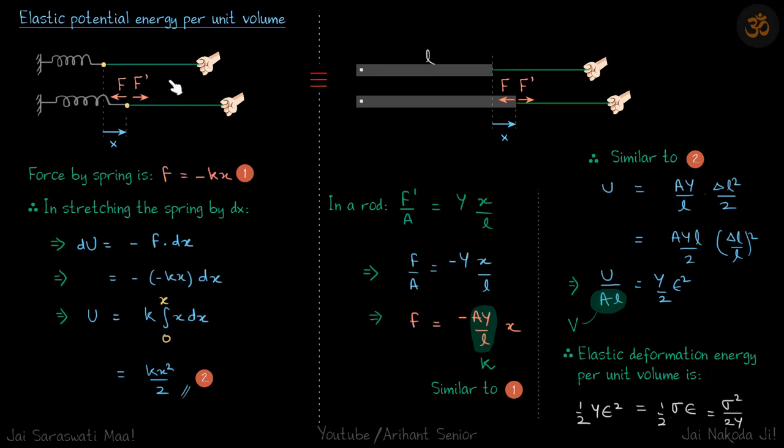Let's take an analogy of a spring. You pull the spring with force F dash, pulling the spring slowly. So an equal and opposite force F is applied on this point by the spring.